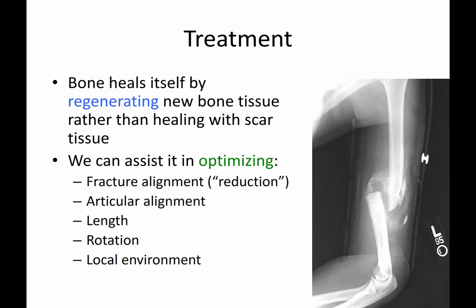When a fracture occurs, the bone heals itself by regenerating new bone tissue rather than healing with scar tissue. If you cut your skin, damage your liver, or have other injuries to tissues in the body, many of those tissues heal with scar or fibrosis and not necessarily by regenerating new tissue. If bone healed with scar tissue, you would never restore mechanical stability.